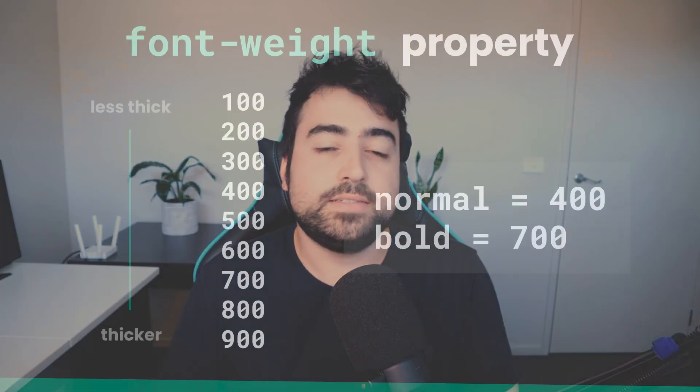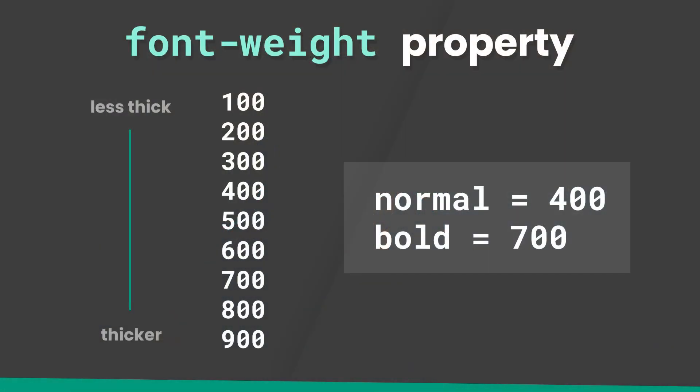First, we're going to have a quick look at the different types of values you can provide to the CSS font-weight property. You can choose between a numeric value or a text value. On the numeric side, you've got between 100 and 900, and as the number increases, so does the thickness of the font. On the text side, more commonly you've got either normal or bold. Some of these values map to numerics — normal is the same as 400 and bold is the same as 700. Try and stick to either numerics or text.